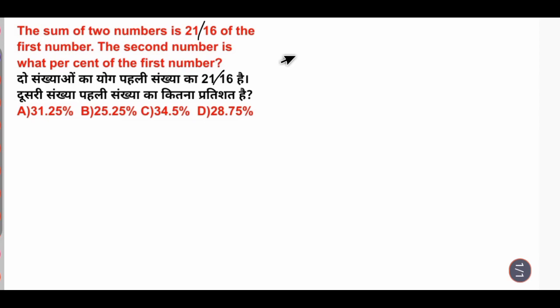So sum of two numbers, which is x plus y, equals 21 by 16 of the first number. What is the first number? x. If we do cross multiply,